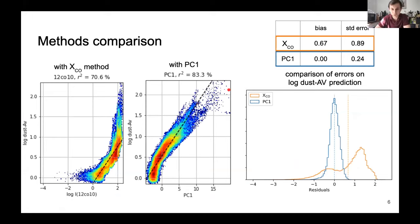And now to quantify a bit this difference of performance between the method of estimating the visual extinction with this XCO method and then the PC1 method, we see that the R squared, which is a quantifier for the linear regression, is much better for the PC-based method than for the XCO one.